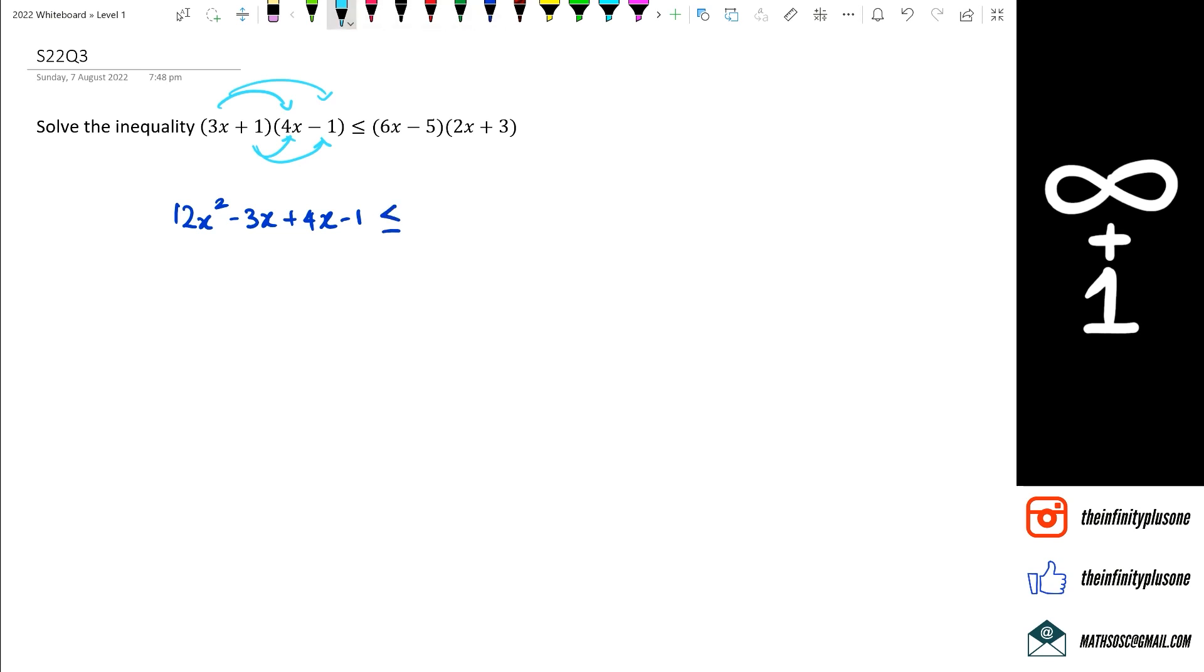Then I've got my second lot of brackets that I need to deal with, which is going to be 6x and 2x, which is 12x squared plus 18x minus 10x minus 15.